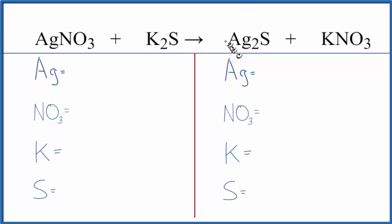The silver goes with the sulfur. We get our Ag2S, and then the potassium ion goes with the nitrate ion. We get potassium nitrate.